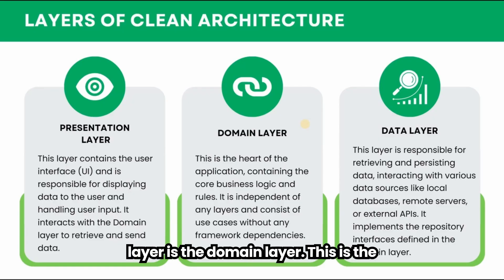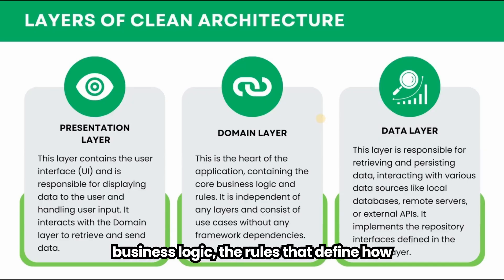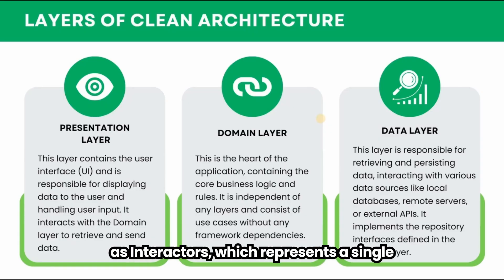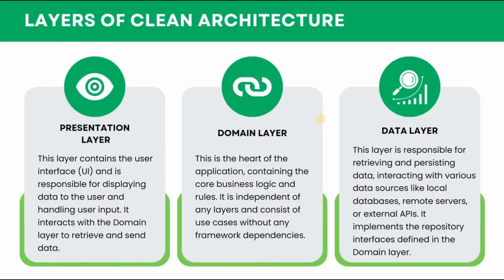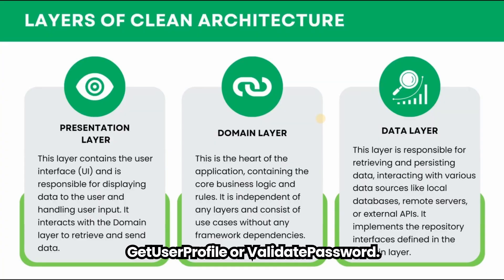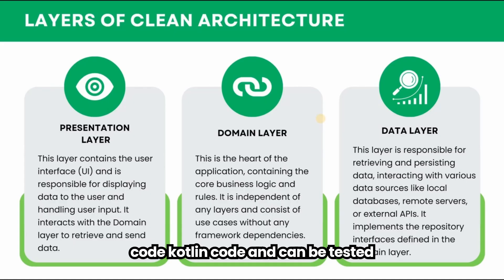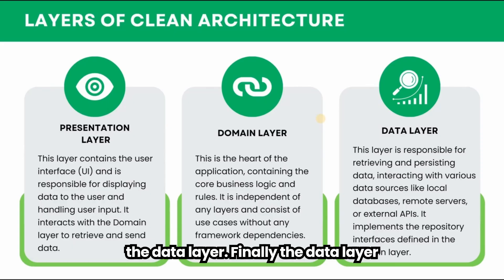The second layer is the domain layer — this is the core of your app. It contains your business logic: the rules that define how your app should behave. Here we write entities, which are the main models of your app, and use cases (also called interactors), which represent a single piece of business logic like add to-do, get user profile, or validate password. The domain layer doesn't know anything about Android or any framework — it's pure Kotlin code and can be tested very easily.